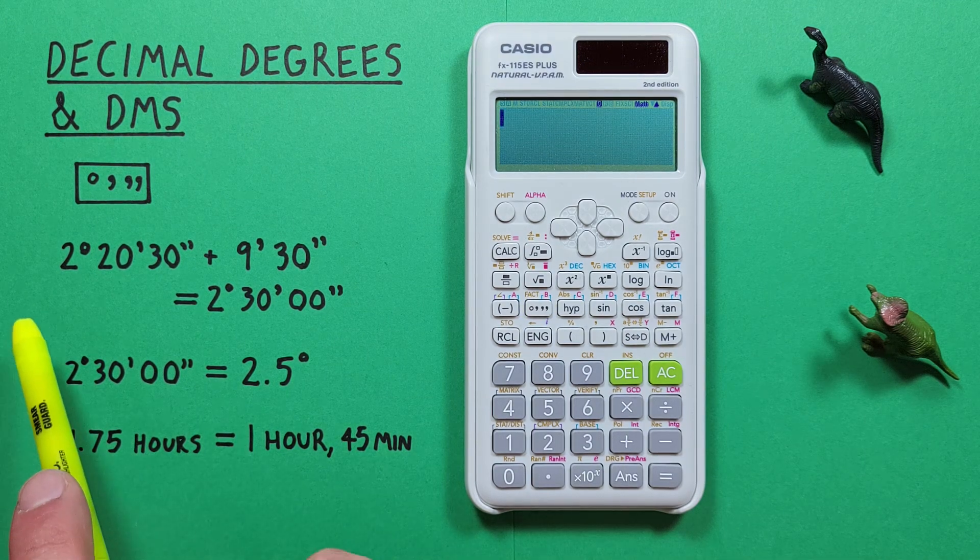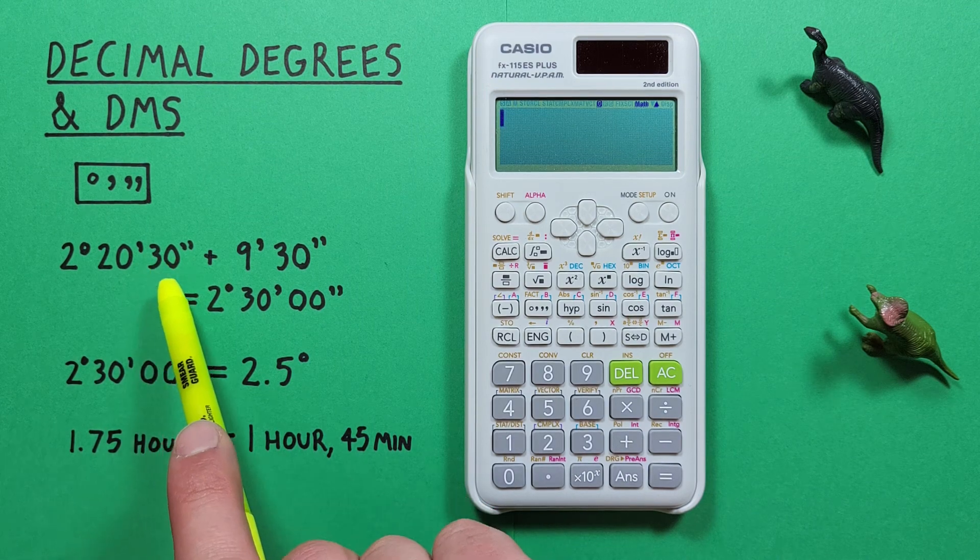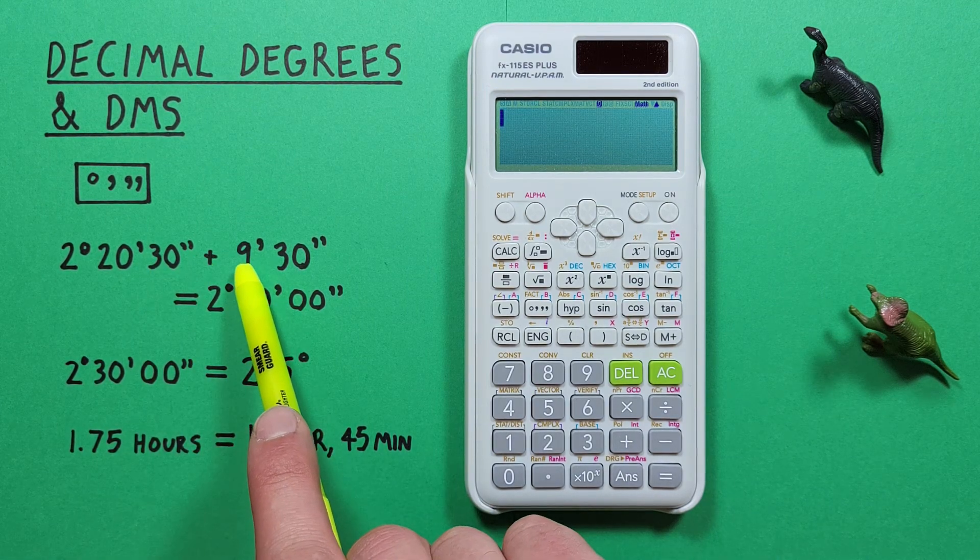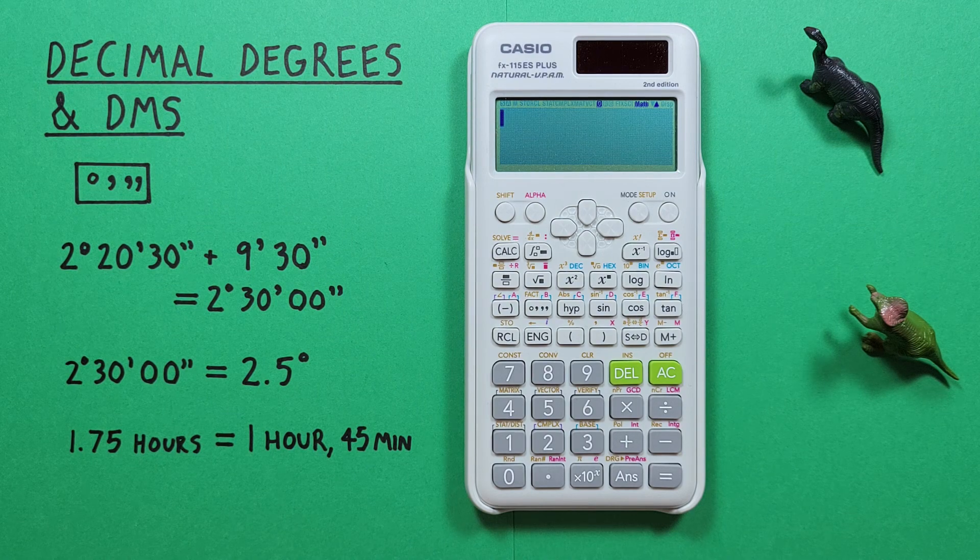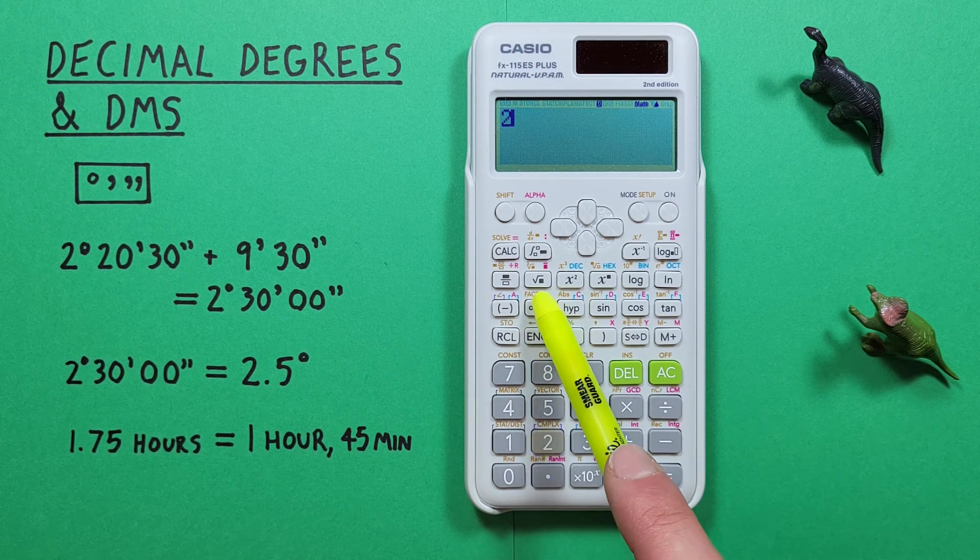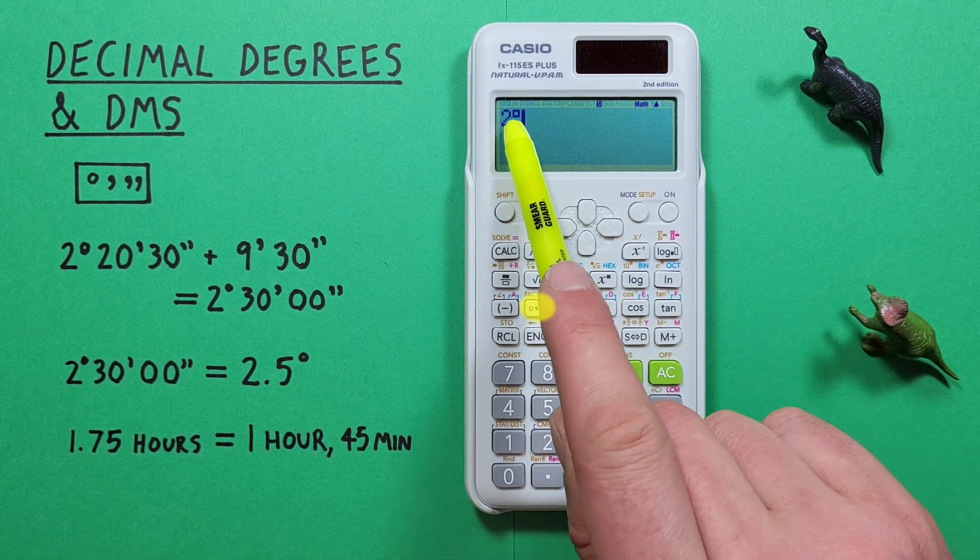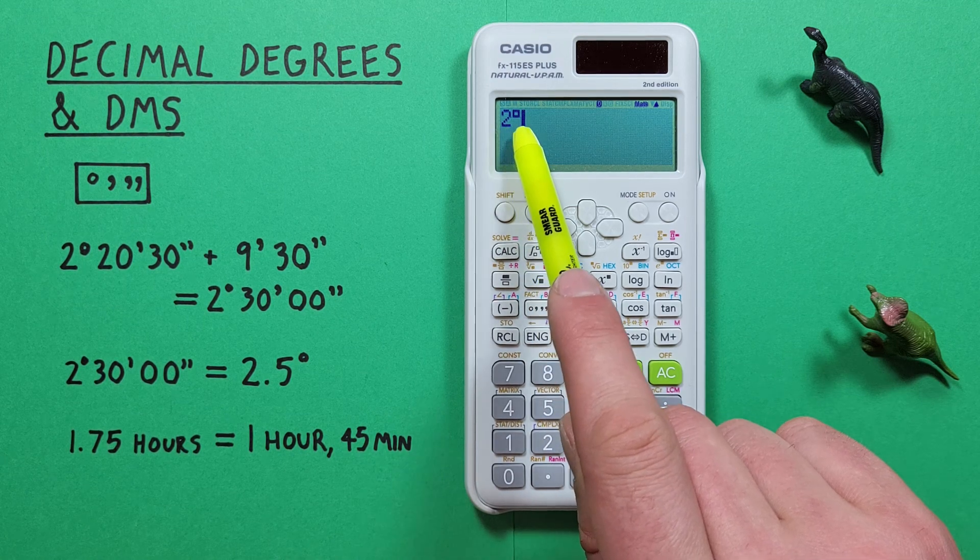Let's say we were given something like 2 degrees 20 minutes 30 seconds plus 9 minutes 30 seconds. To do this we would start by entering the degrees so 2 and then press the degrees key and we see a degree symbol appear beside our 2 so that's representing 2 degrees now.